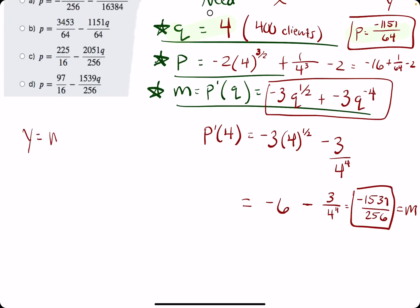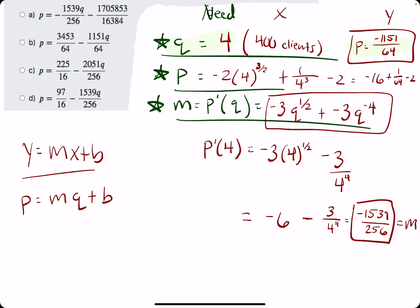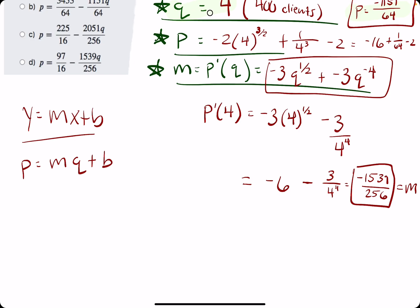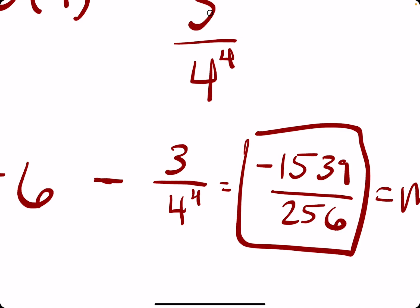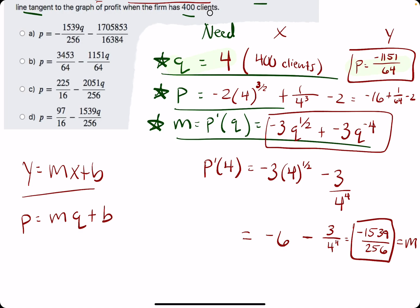We have a q of 4, a p of negative 1151/64, and a slope. Similar to y equals mx plus b, we're going to use p equals mq plus b. The nice thing is you should see our m value in the answer choices right away — negative 1539 over 256 — which appears in option D and option A, and nowhere else.